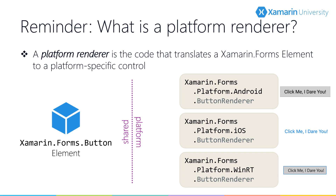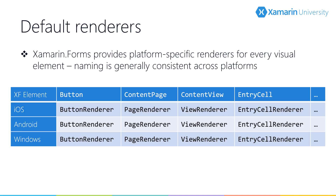Xamarin Forms includes a renderer for each visual element on each supported platform. The naming of the renderers is almost always the same on each platform, and they are often named by simply adding the word 'renderer' to the end of the element name. There are exceptions — sometimes the name is simplified, as with a content page or content view, whose renderers are simply called PageRenderer and ViewRenderer. This consistency makes it easier to discover the renderers for each Xamarin Forms element.